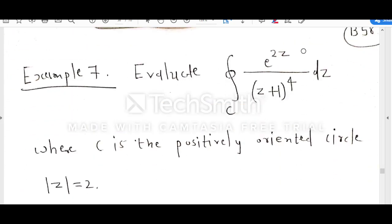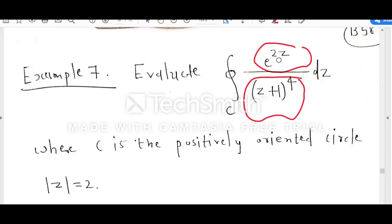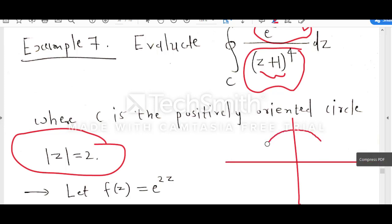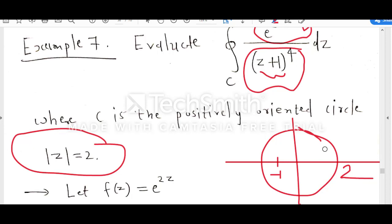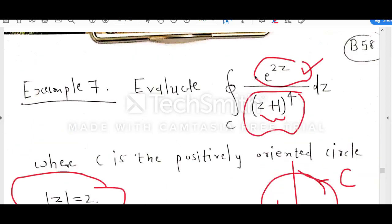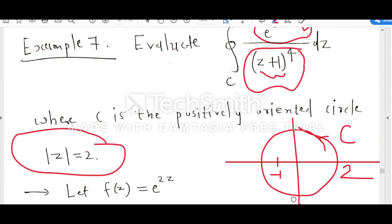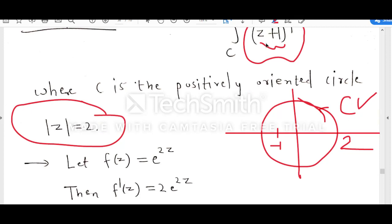Consider one example: the function is e raised to 2z divided by z plus 1 to the power 4. Comparing with f(z) upon z minus z₀, we have f(z) equal to e raised to 2z and z₀ equal to minus 1. The simple closed contour is mod z equal to 2. We know that z equal to minus 1 is inside mod z equal to 2, so minus 1 lies inside the contour. Since e raised to 2z is analytic everywhere, f(z) is analytic everywhere inside and on this contour, and z₀ is minus 1 which is inside. So we can apply Cauchy integral formula.